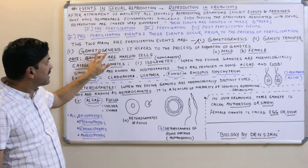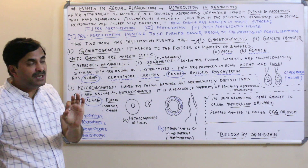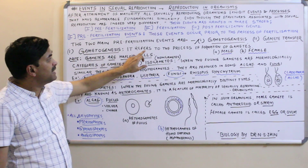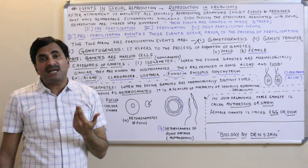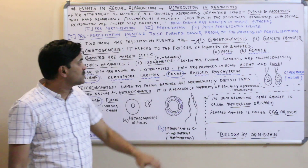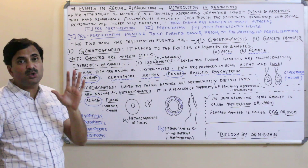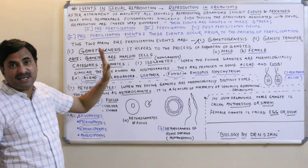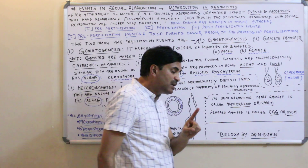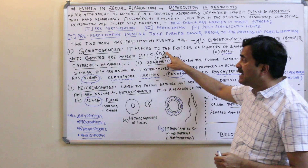We are starting today with gametogenesis. As the name indicates — gameto means gamete, genesis means formation — so it refers to the process of formation of gametes. In sexually reproducing organisms, two types of gametes are produced: one is the male gamete, another is the female gamete. You must know that gametes are always haploid cells, meaning they have only one set of chromosomes, denoted by N.